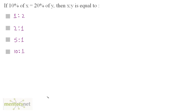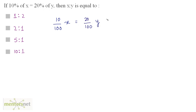If 10% of x is equal to 20% of y, then the ratio x is to y is equal to? This question is very simple. We have 10% of x is equal to 20% of y. So 10% of x can be written as 10 by 100 of x, and 20% of y is 20 by 100 of y.